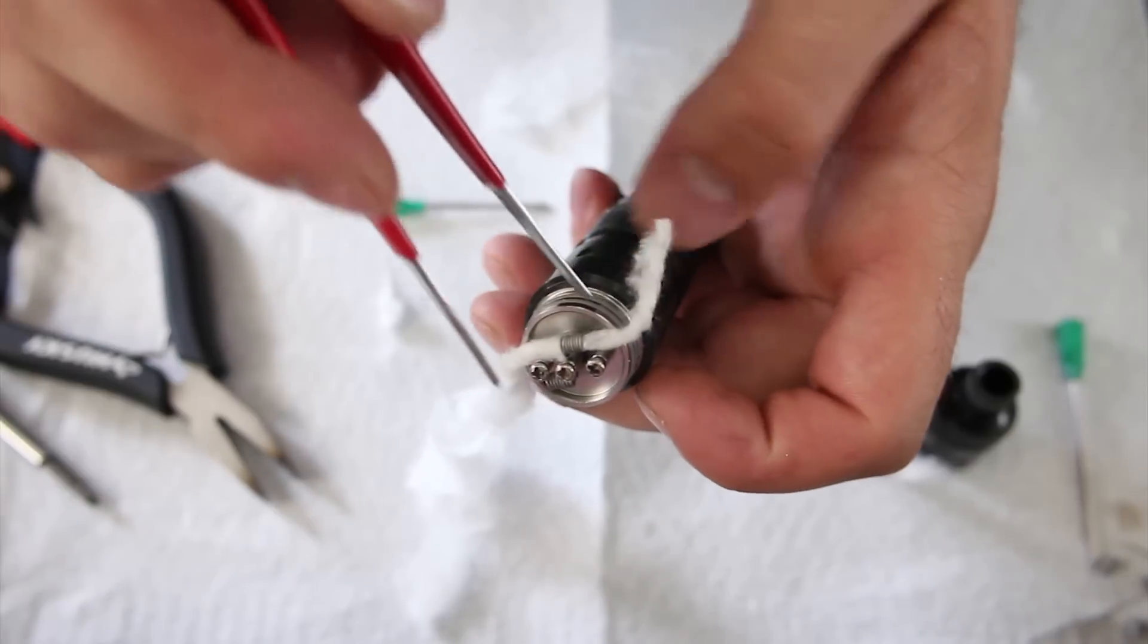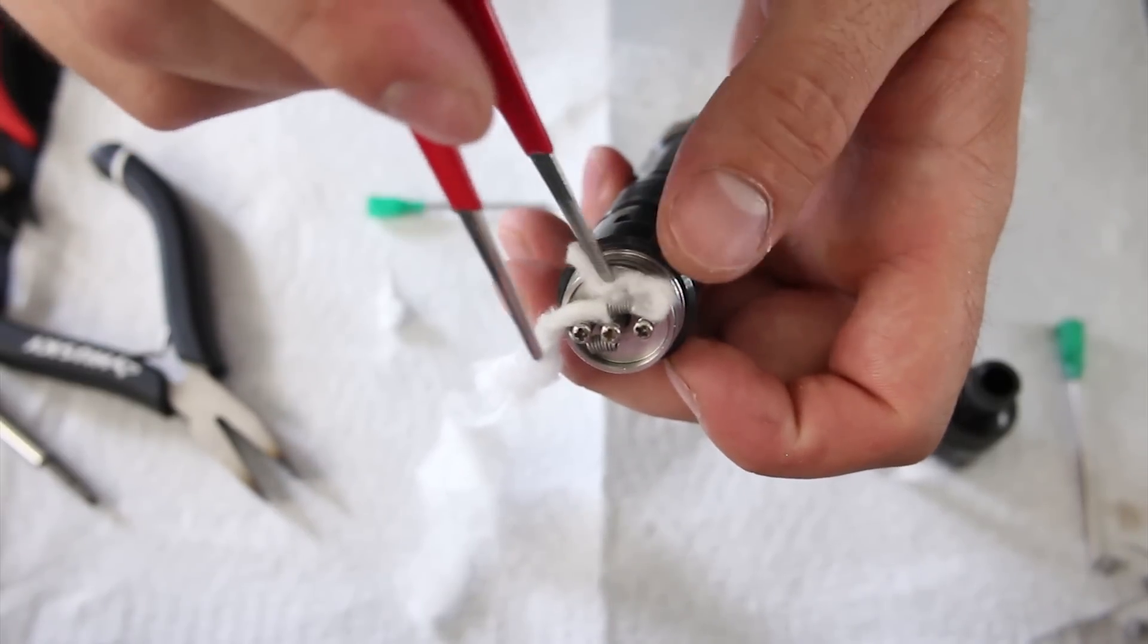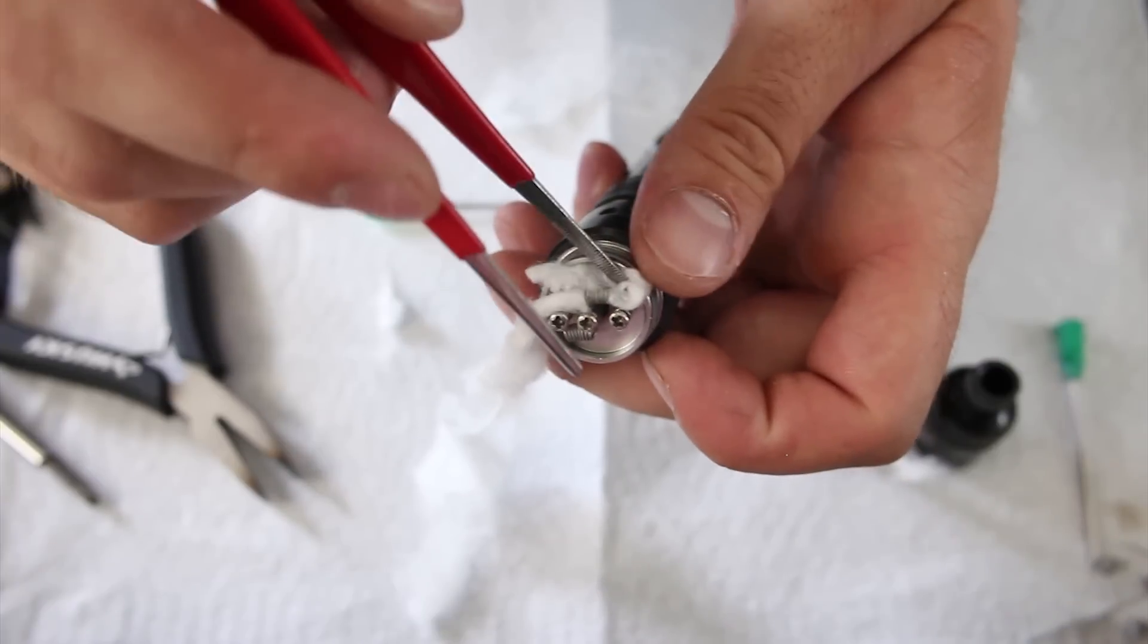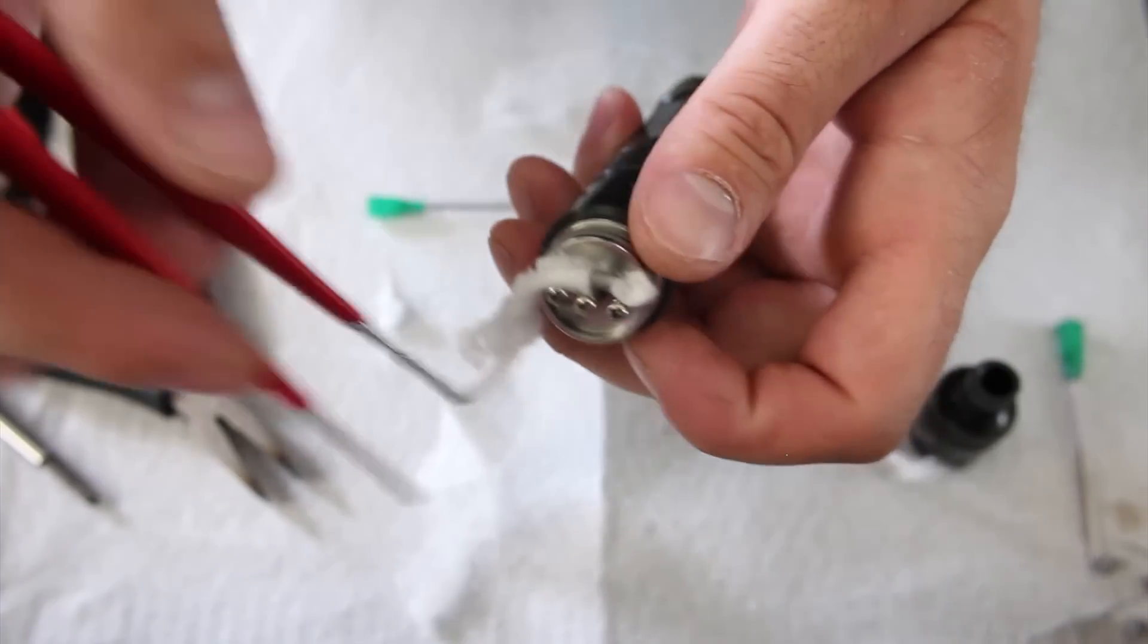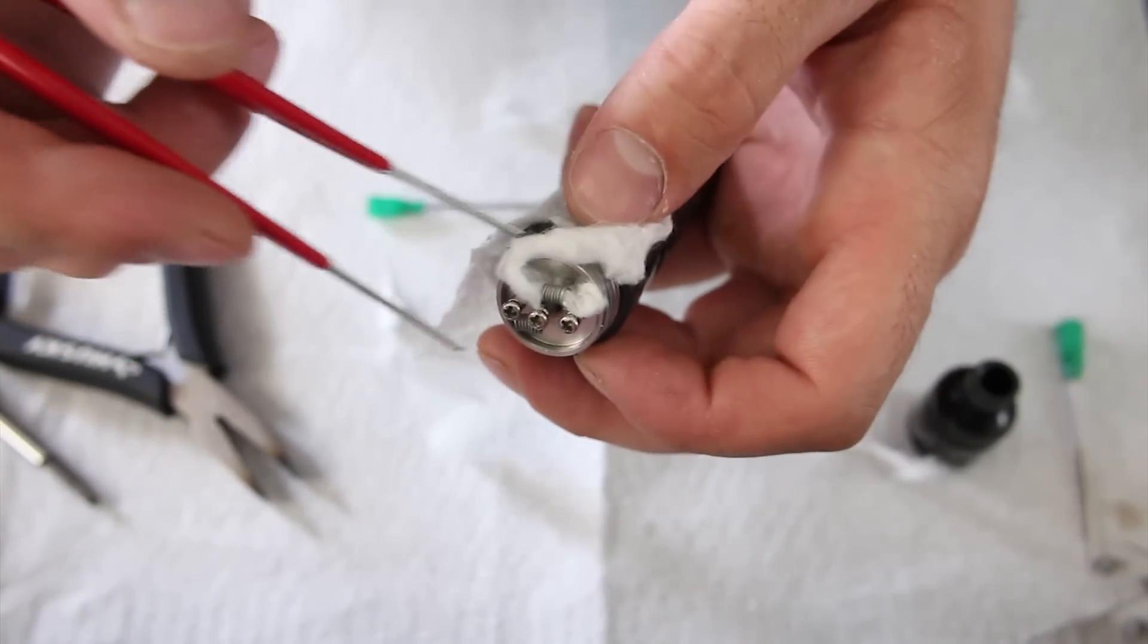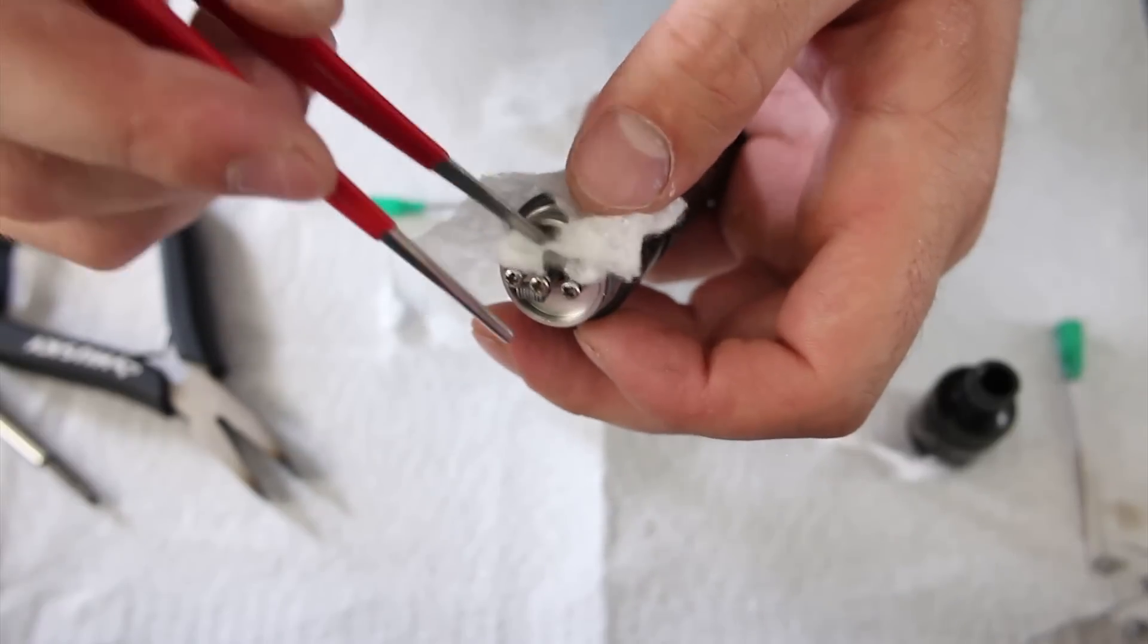So I'm going to actually clip a little bit of this side off here. You wick it pretty much the same as any micro coil. Put the first tail of cotton right underneath the coil itself.